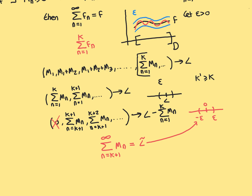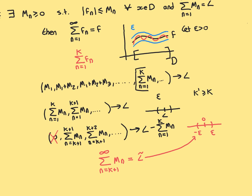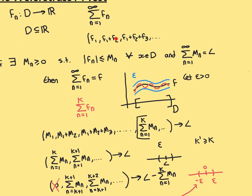We'll have a break here, and in the next video I will claim that my big K works for the uniform convergence criterion of the series of functions to the limit function f — i.e. that if I go to the K-th partial sum f_1 + f_2 + ... + f_K in the sequence of partial sums, then that partial sum and all partial sums beyond it will be within epsilon distance of my limit function f.